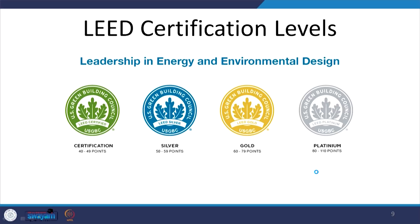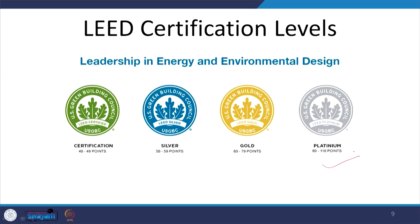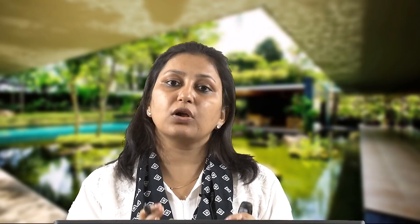If you look at the LEED certification level, buildings are given a certification level: platinum, gold, silver, or just certified. Platinum is the highest and the total maximum points a building can earn is 110. From 80 and above it is platinum certified, which is often very difficult to achieve; gold is 60 to 79 points, and silver is from 50 to 59. This kind of certification level exists for all different rating programs.